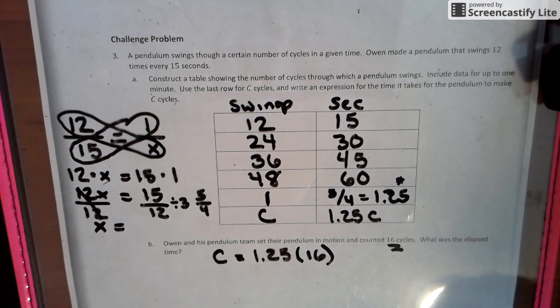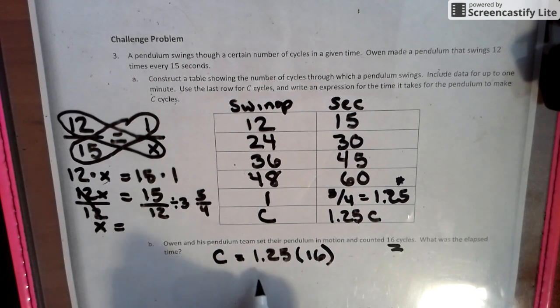when we take one and a quarter, and we times it by 16, we'll get what was the elapsed time? 20 seconds.